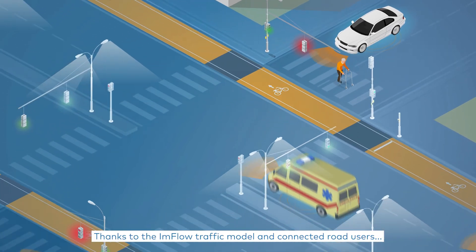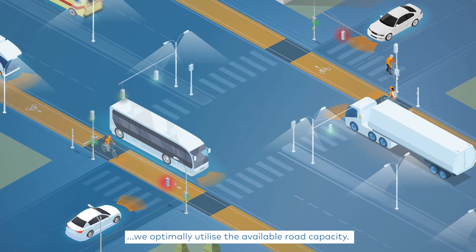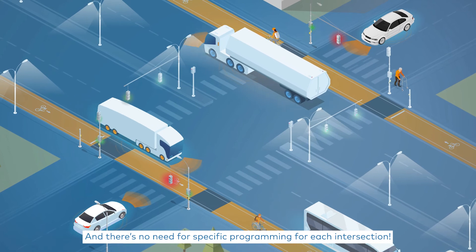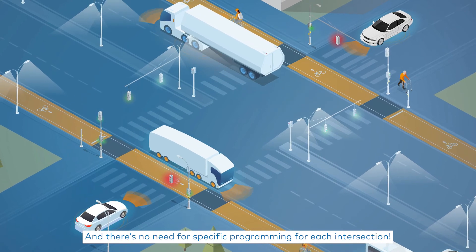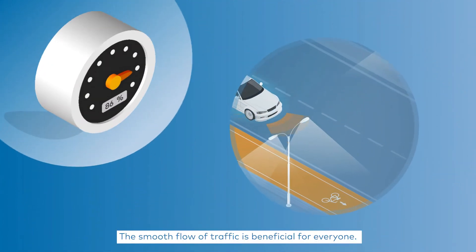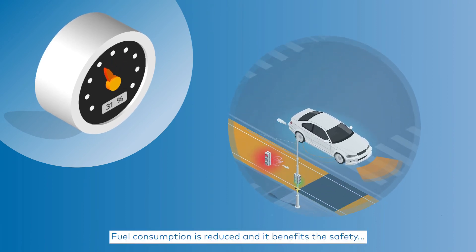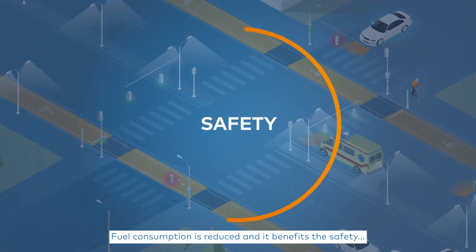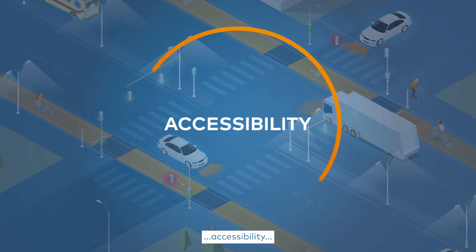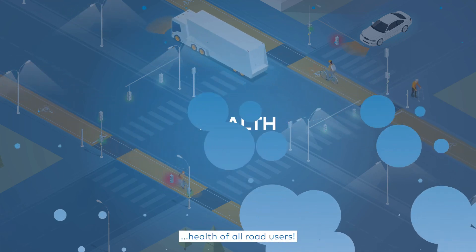Thanks to the Inflow traffic model and connected road users, we optimally utilize the available road capacity. And there's no need for specific programming for each intersection. The smooth flow of traffic is beneficial for everyone — fuel consumption is reduced, and it benefits the safety, speed, accessibility, and health of all road users.